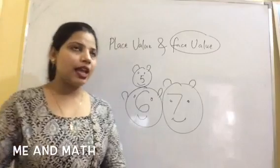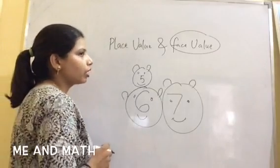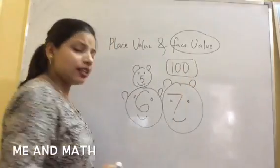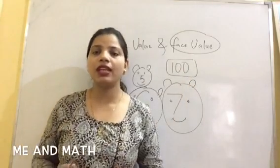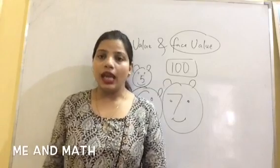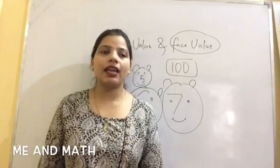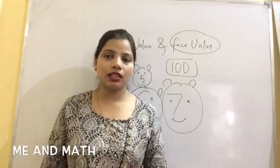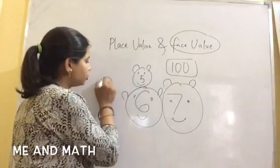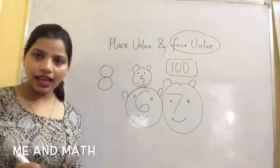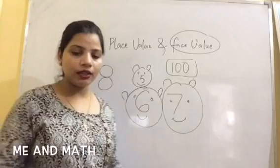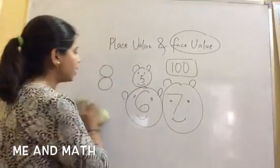Same as that, every number has its unique face value. As I call hundred, write hundred, hundred will be written like this. This is the face value. Face value is the identification of number. If I say write eight, you will write eight as it is. So this is what we are talking about - face value. Now let's discuss about place value.